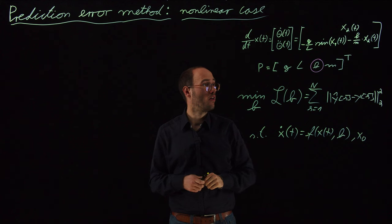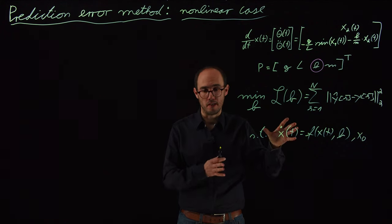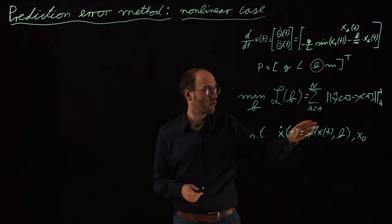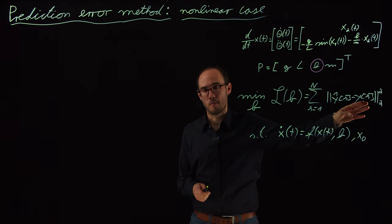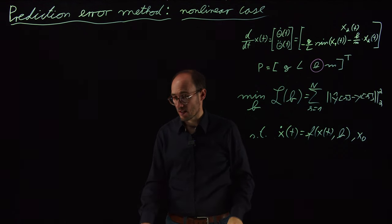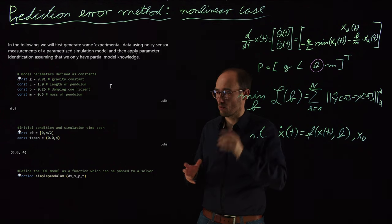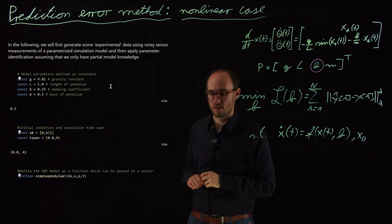So we now basically utilize this approach in order to find b. In order to do so, first we are going to need some ground truth data, which we can feed in into this cost function. So let's go into a practical programming example using this Julia notebook in order to first generate this ground truth data.